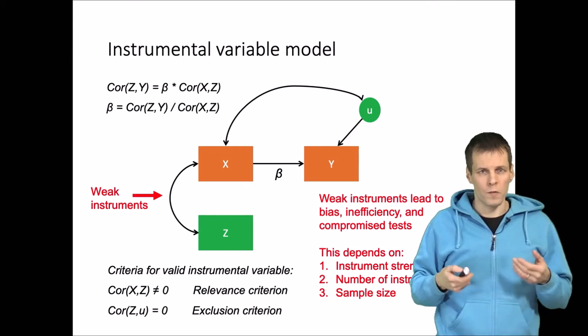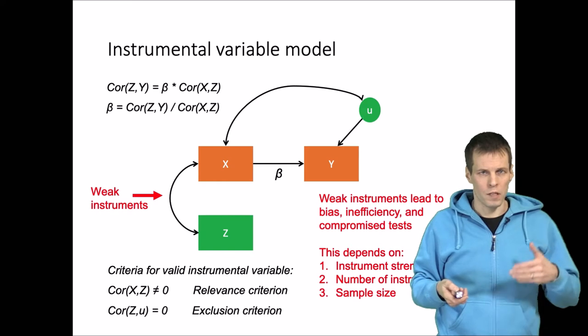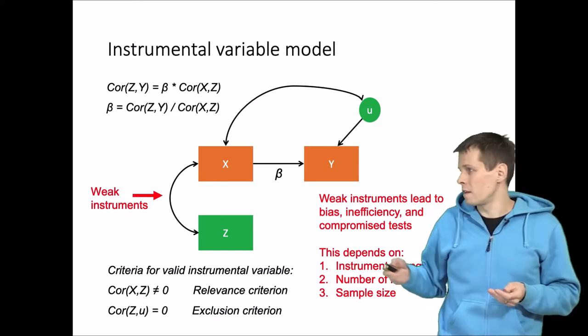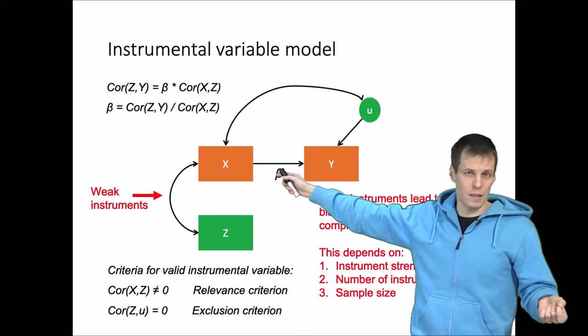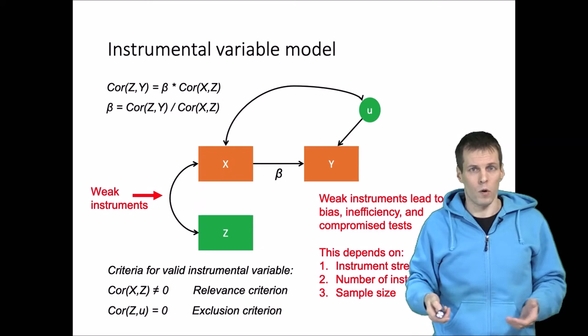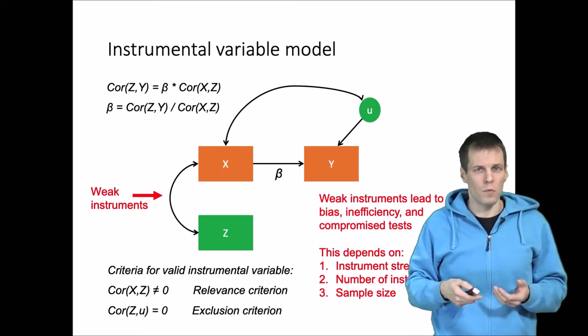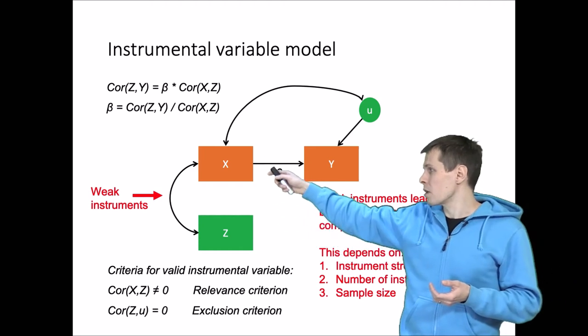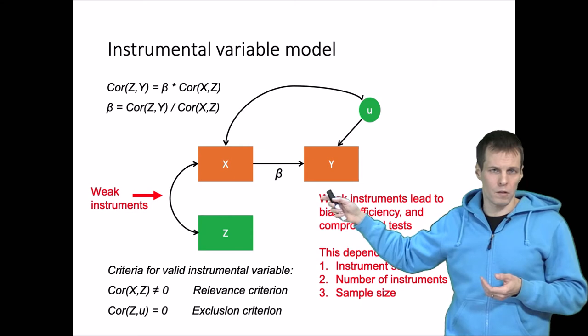When the R-square of the first stage regression reaches exactly one, we are seriously overfitting the model. Then the predicted value of x is simply x and the instrumental variable estimates will be the same as OLS estimates. So if you have weak instruments and sample size is small, then you have this bias because of positive bias of R-square and that influences the regression here.